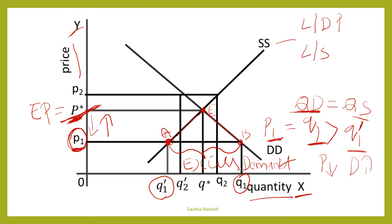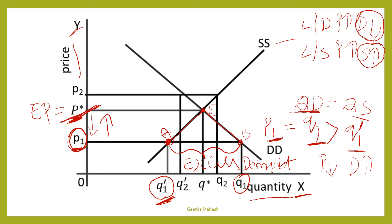We know this with the help of the law of demand and law of supply. Law of demand says when price increases, demand decreases. Law of supply says when price increases, supply increases. As there is excess demand, we should reduce demand, and as there is a shortage of supply, we need to increase supply — both achieved by rising the price. So automatically, price will start rising when there is excess demand. This is the invisible hand, which guides both consumers and producers in the market.